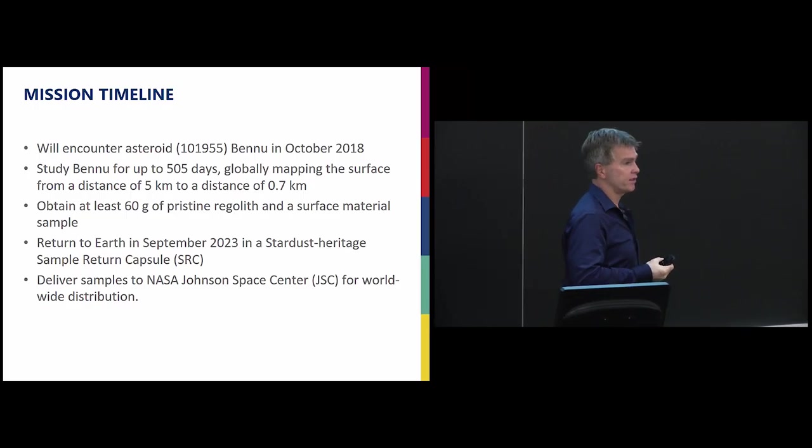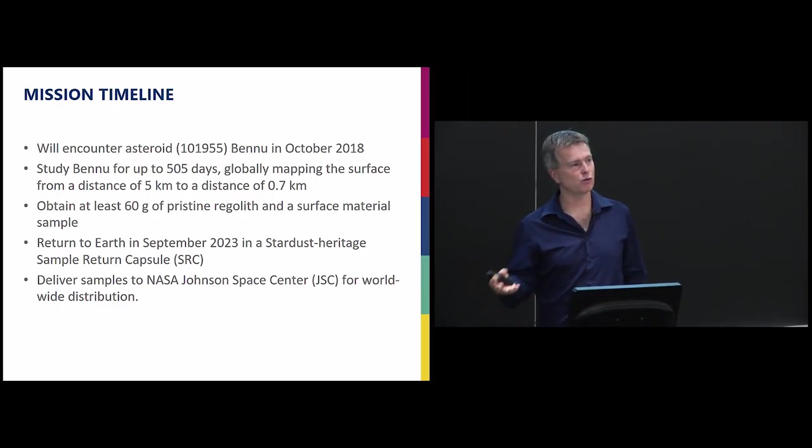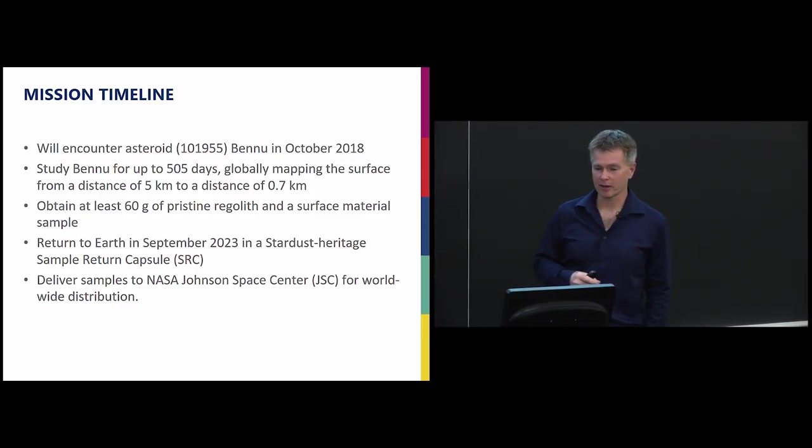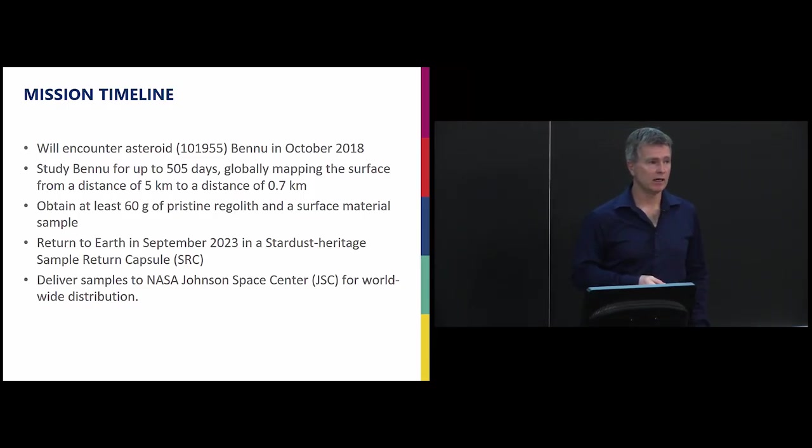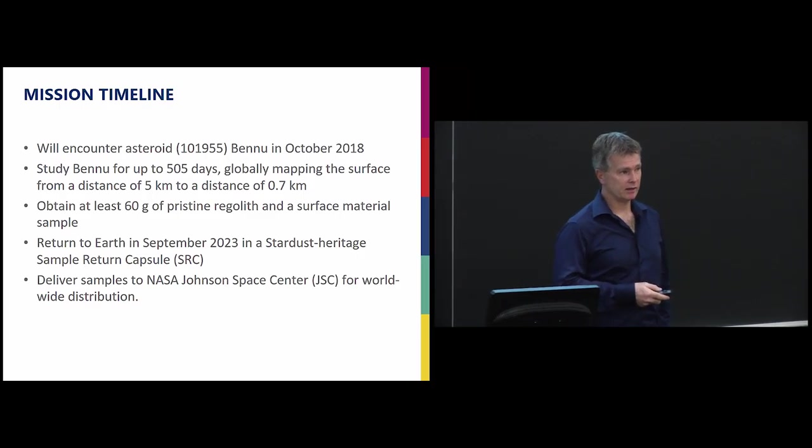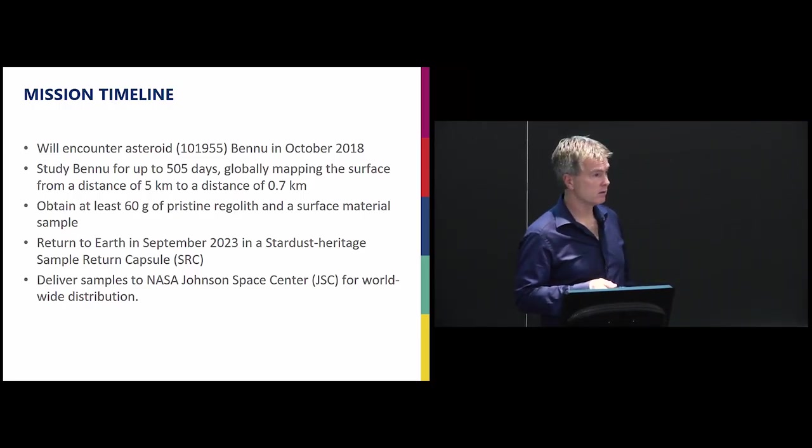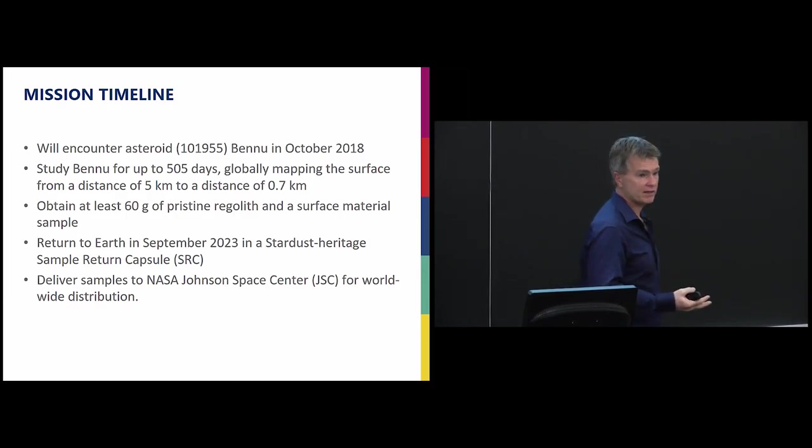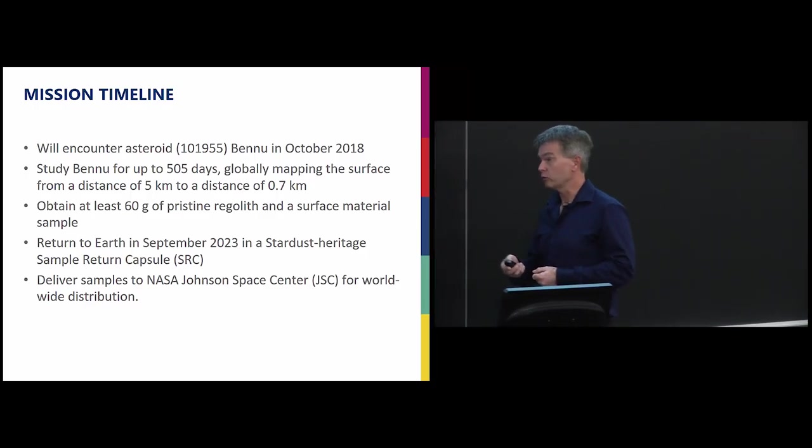The mission goal is 60 grams. Doesn't sound like a lot of sample, but actually 60 grams is enough to accomplish all our science goals and to put most of the sample away for future generations as we develop new instruments. We actually hope that we get something more on the order of a kilogram. That sample comes back in 2023, in a capsule that lands in Utah. Samples go back to NASA Johnson in Houston and actually because of Canada's contribution, we get a portion of that sample back and that'll be our country's first pristine sample from space.